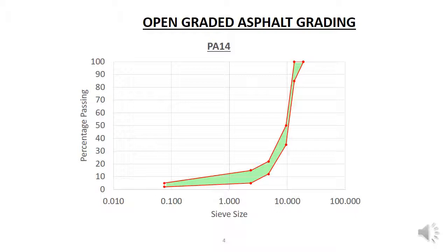This is because there is less binder in porous asphalt, so there are voids in the mix which allow water to pass through. In contrast, stone mastic asphalt has the voids filled with extra binder to give it its high strength, which closes off the voids, making the stone mastic asphalt impermeable — that is, water does not flow through it.